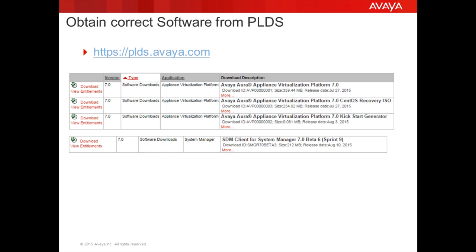You may also need to download the Solution Deployment Manager software. Solution Deployment Manager is a centralized software management solution that enables deployments, upgrades, migrations, and updates to the suite of Avaya Aura 7 applications installed on AVP. SDM is either available as a standalone installation package or it can be accessed through the latest release of System Manager 7. You will need access to either a standalone SDM or System Manager 7 if you want to deploy any applications on AVP.